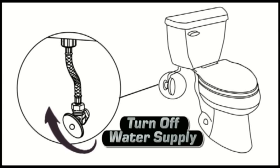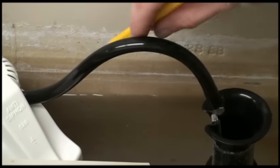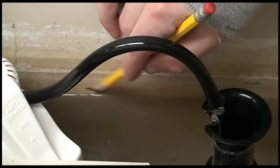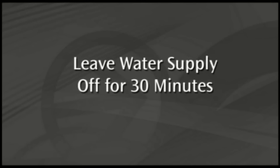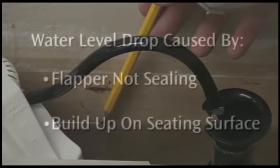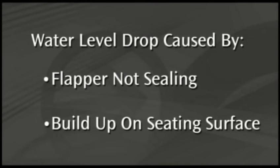To test for a leak, turn off the water supply line and mark the water level line in the tank with a pencil. Leave the water supply line shut off for 30 minutes. A water level drop in the toilet tank during this period is an indication that the flapper is not sealing properly, meaning the flapper is worn and needs to be replaced.